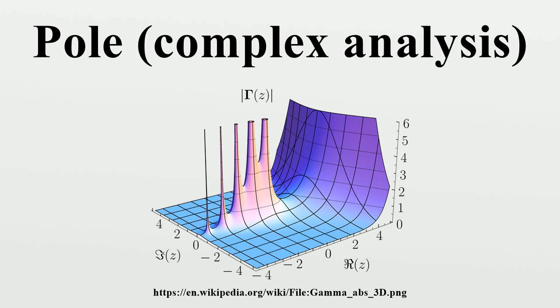If there exists a holomorphic function g: U → C such that g(p) is non-zero, and a positive integer n, such that for all z in U \ {p}, f(z) = g(z)/(z-p)^n holds, then p is called a pole of f.